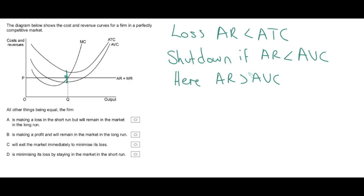I would be writing all of this down in the white space if this were an exam question. Now, knowing all that, let's go to the answers and try to eliminate two wrong answers. Option A says the firm is making a loss in the short run but will remain in the market in the long run — that's a bit tricky. Option B says it's making a profit — no, we know they're making a loss, clearly wrong. Option C says it will exit the market immediately to minimize its loss — no, because they are covering their average variable cost, so staying in the market in the short run is the rational strategy. That's wrong. We've now eliminated two clear wrong answers.